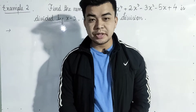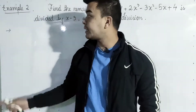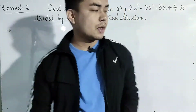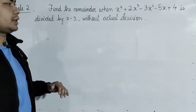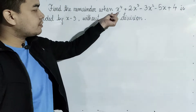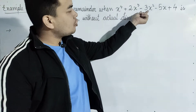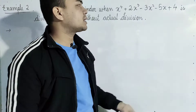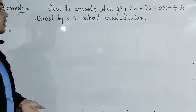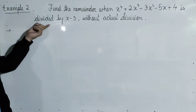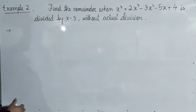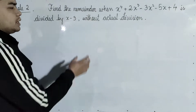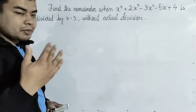Let's go to page number 29, example number 2. Example number 2 is find the remainder. Let's go to x to the power 4 plus 2x cubed minus 3x squared minus 5x plus 4, divided by x minus 3. Without actual division.